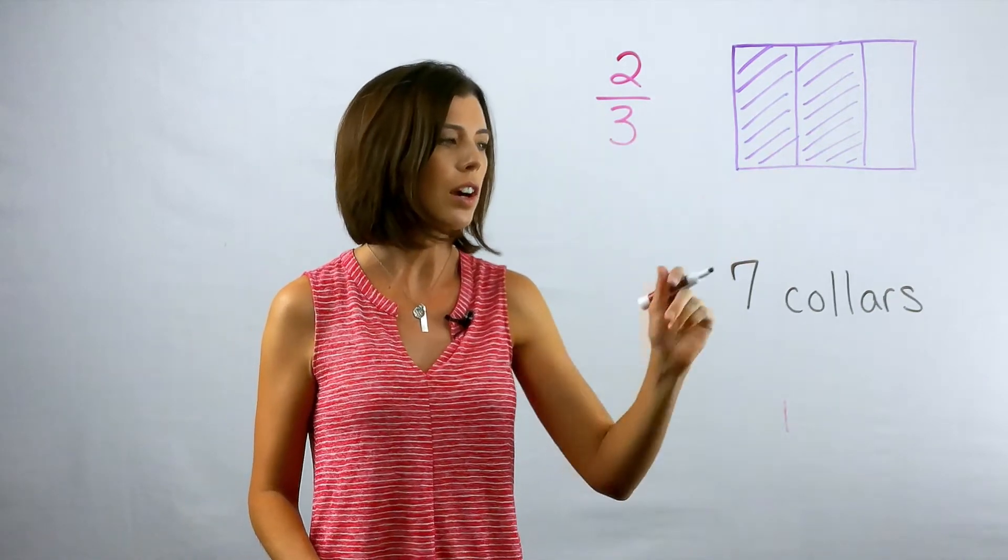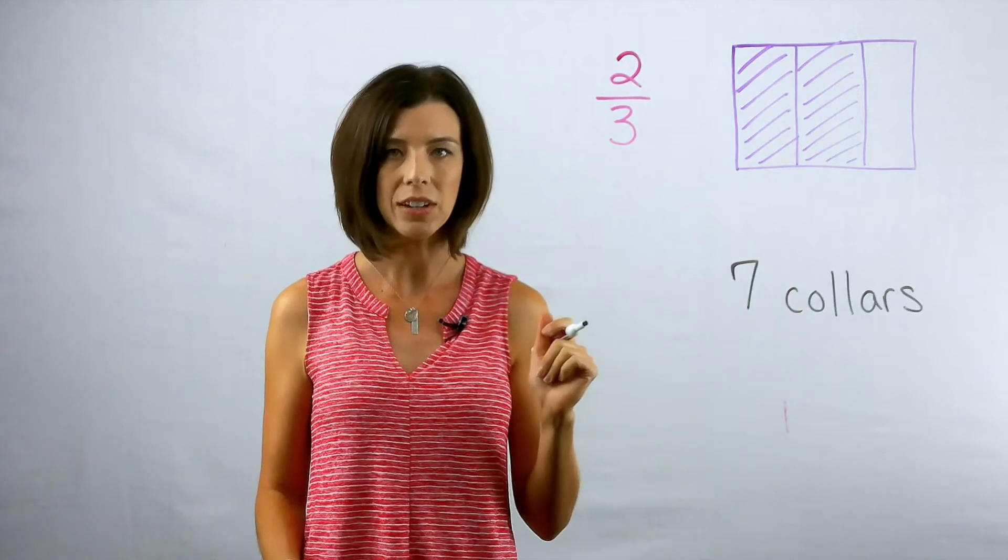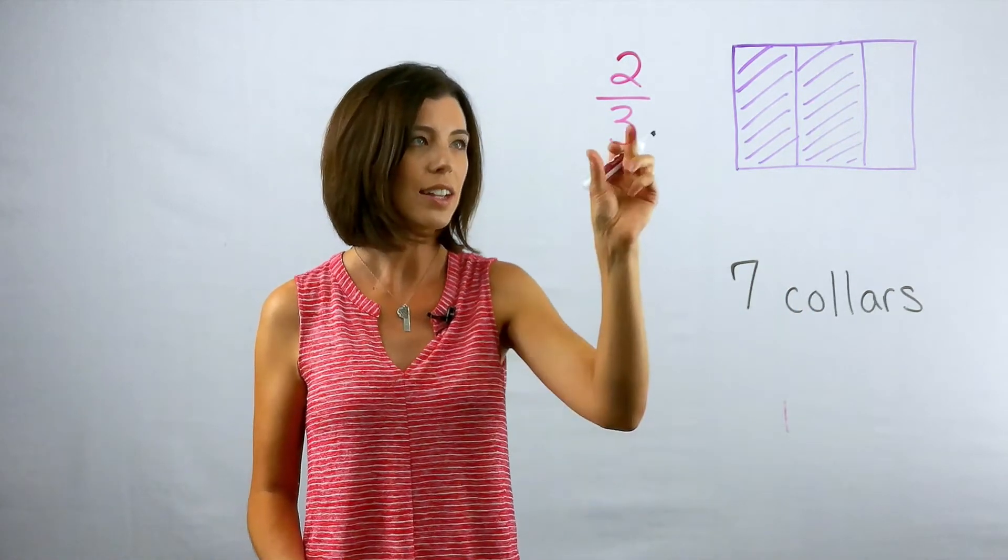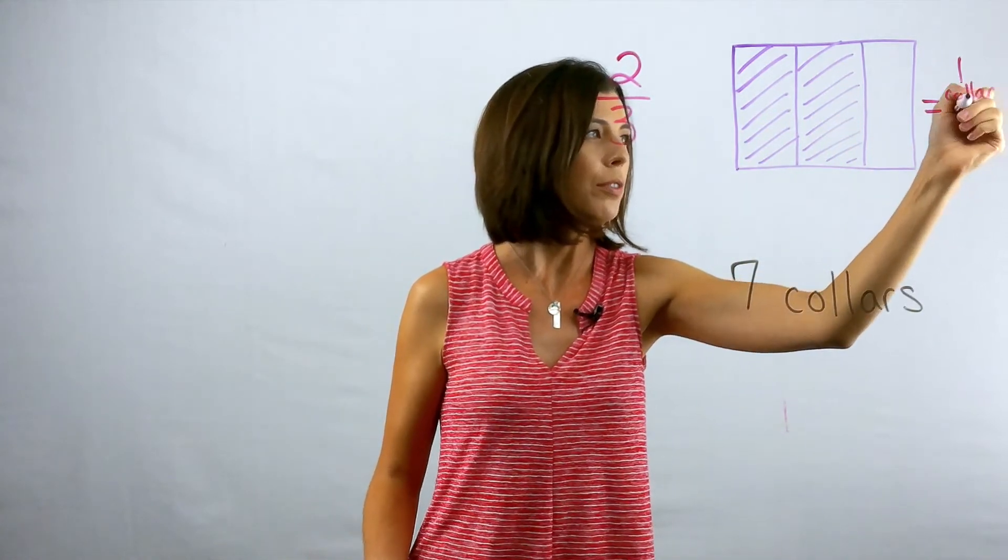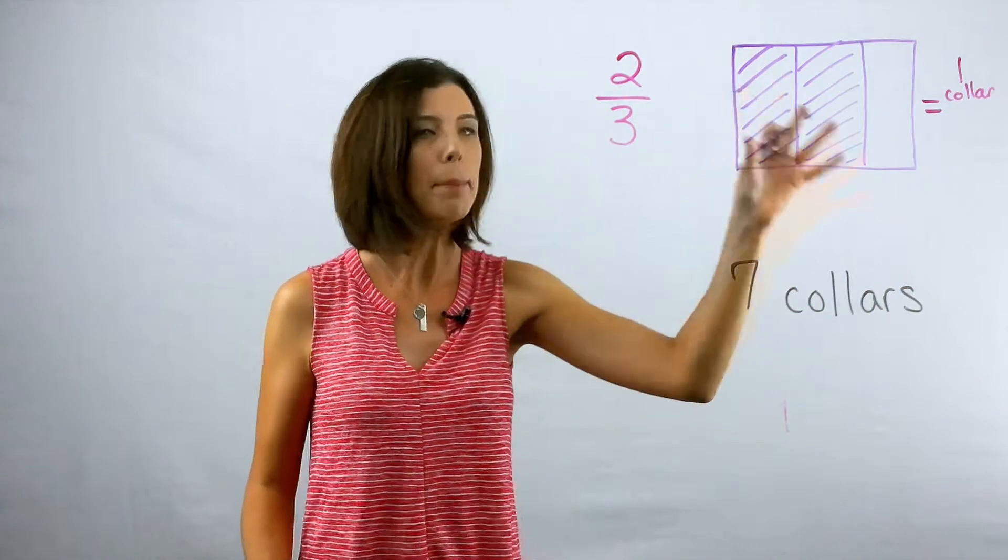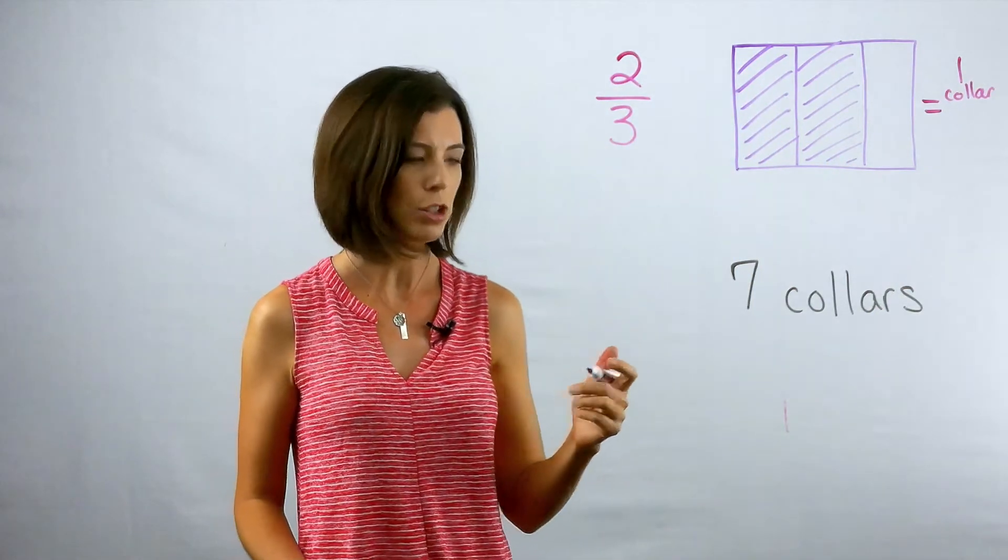So I have two-thirds of a yard that I need for one collar. So now I need to make seven collars. I can think of this as really I need, if this is just one collar, then I really need seven copies of this, right? And remember, we're thinking copies of, we're thinking multiplication.